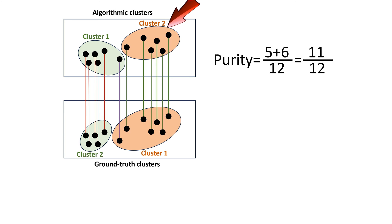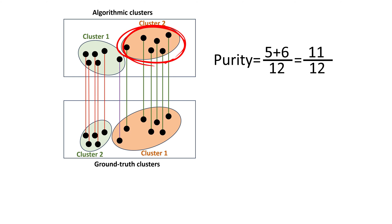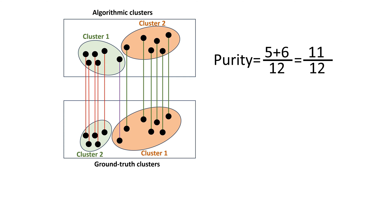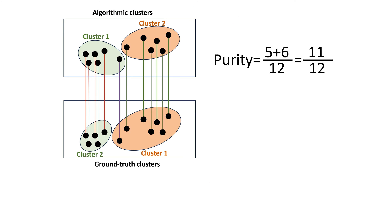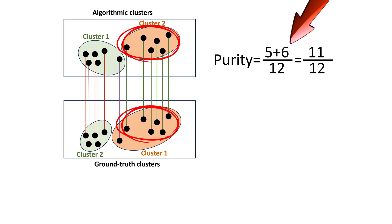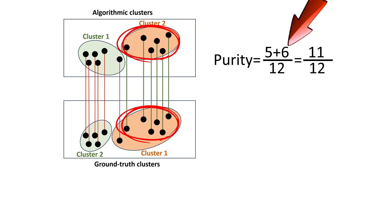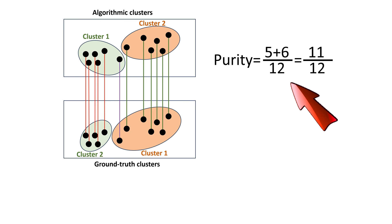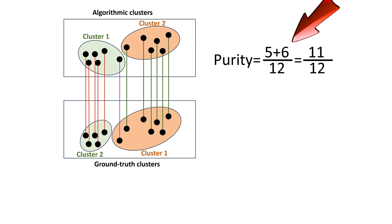Cluster 2 of the algorithmic clusters has six points in ground truth cluster 1. None of the points of cluster 2 of the algorithm are seen in cluster 2 of the ground truth. So cluster 2 of the algorithmic clustering is actually cluster 1 of the ground truth. Hence, six points common between algorithmic cluster 2 and ground truth cluster 1 are counted in the numerator. The denominator is the total number of points — 12. Five plus six equals 11, therefore purity is 11 divided by 12.